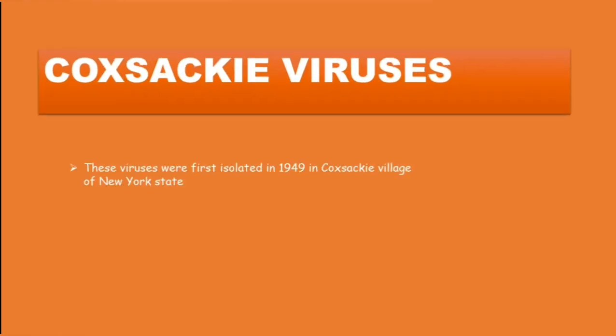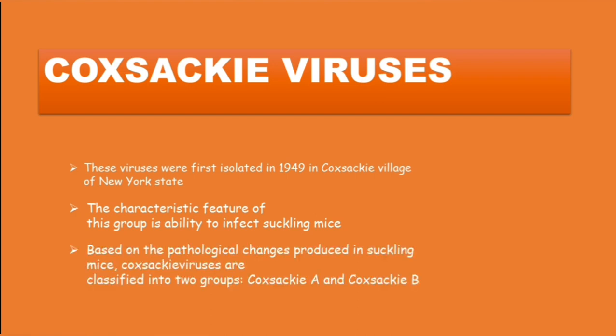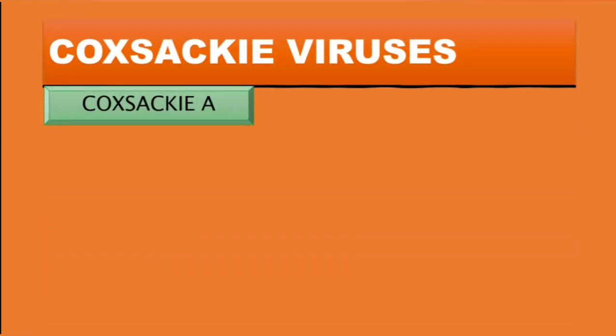Coxsackieviruses were first isolated in 1949 in Coxsackie village in New York. The characteristic feature of this group is the ability to infect suckling mice. Based on the pathological changes produced in suckling mice, the coxsackieviruses are classified into two groups: coxsackie A and coxsackie B virus.